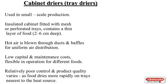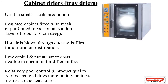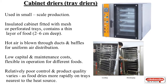The next one is the cabinet dryer, also called tray drying, which is used in small-scale production. An insulated cabinet fitted with mesh or perforated trays contains a thin layer of food around 2 to 6 centimeters deep. Hot air is blown through ducts and baffles for uniform air distribution. It has low capital and maintenance cost and is flexible in operation, but has relatively poor control, and product quality varies as food dries more rapidly on trays nearest to the heat source.